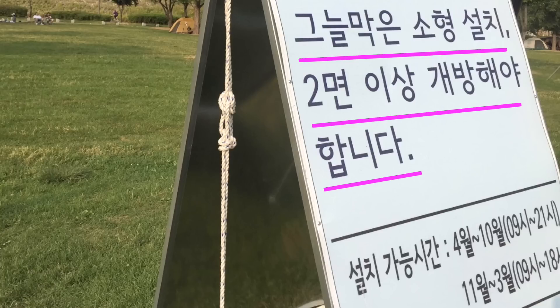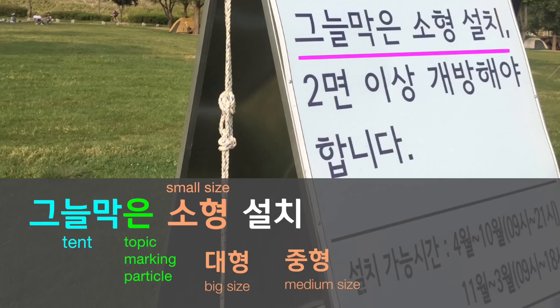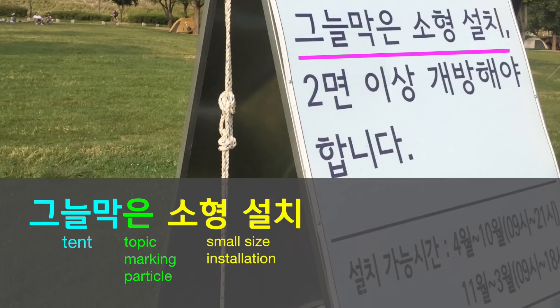You already know what 그늘막 is. The 은 there is a topic marking particle that tells you what they're talking about. And 소형 means small size. 소형. The opposite would be 대형, meaning big size, and medium size is 중형. So 소형 설치 means small size installation. The sentence structure here isn't very clear so far, but let's keep reading.